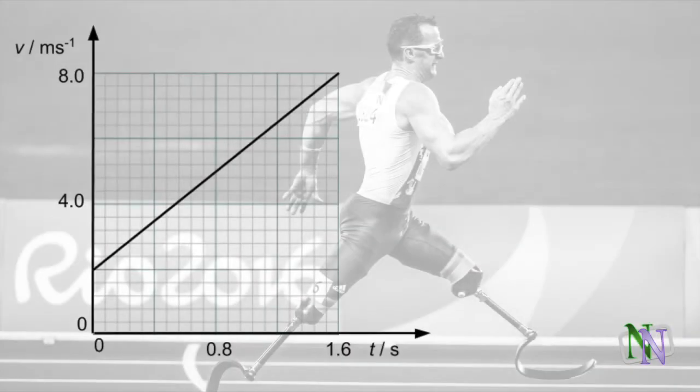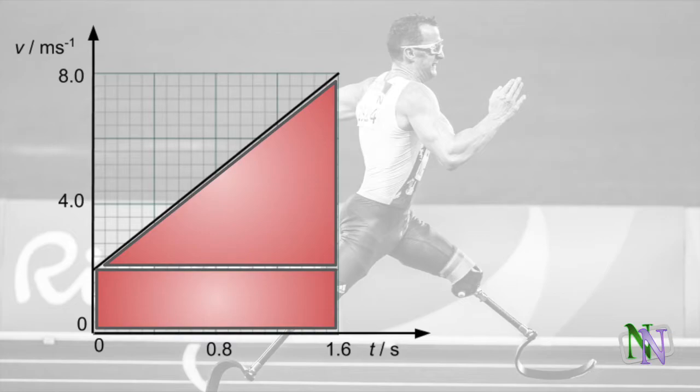Here is a runner increasing his speed from 2m per second to 8m per second in 1.6 seconds. We assume his acceleration is uniform, so the graph is straight. We can make two calculations from this graphical information. His acceleration is the gradient of the graph, and his displacement is the area under the graph.